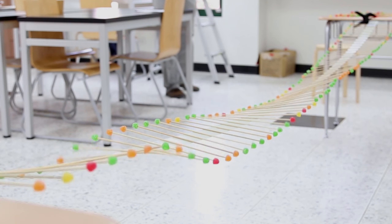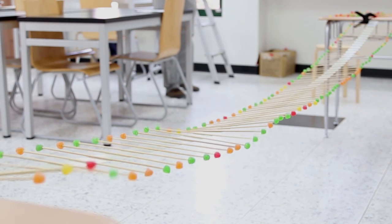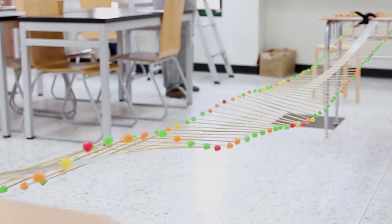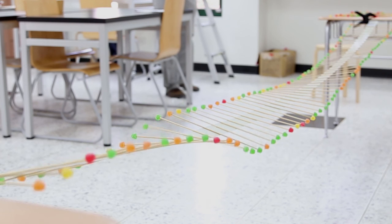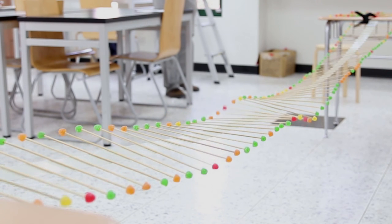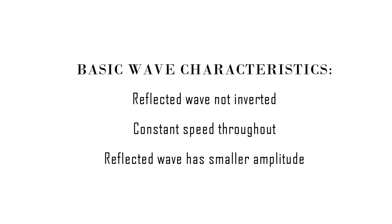The pulses do not eventually resume their original form because the destructive interference keeps occurring. The experiment proves that the hypothesis is valid: the reflective wave is not inverted, has constant speed throughout, and the amplitude decreases over time.